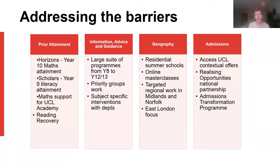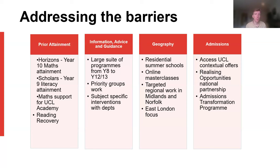Some of the ways we work in our team to overcome these barriers — we have quite a large suite of activities across our department, working with students from Year 9 up to Year 13, and some projects go down to Year 7 for visits to UCL. We do a lot of work on prior attainment, so we have a maths programme and a literacy attainment raising programme. We offer a large suite of programmes addressing information, advice and guidance, running from Year 7 up to Year 13. We have projects which address geographical barriers, including residential summer schools which bring students to UCL for a week on campus, and targeted work in the Midlands, Norfolk, and an East London wing. And we work with the admissions team to run contextual offers for some of the young people applying to UCL.